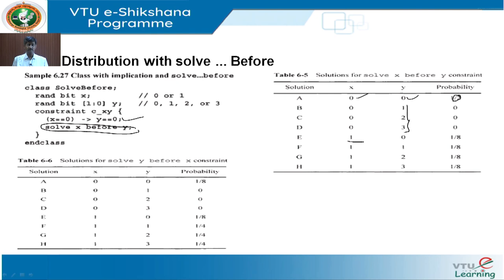With one-zero, I first solve for x and then for y. That is what we have done till now. Then one-one, one-two, one-three — so the solution is one out of eight probabilities.